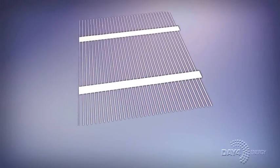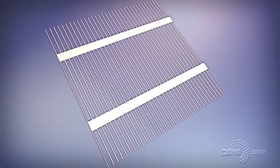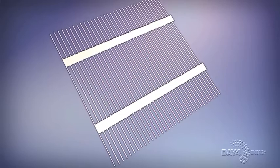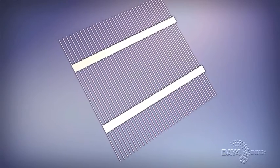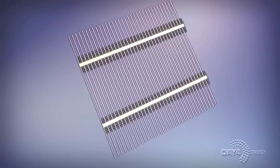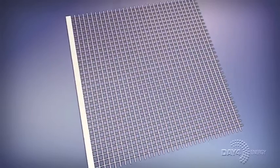To begin with, we changed the traditional bus bar architecture. Stay Powerful technology connects solar cells with many electrically efficient copper wires coated with a custom-made low melting point alloy.